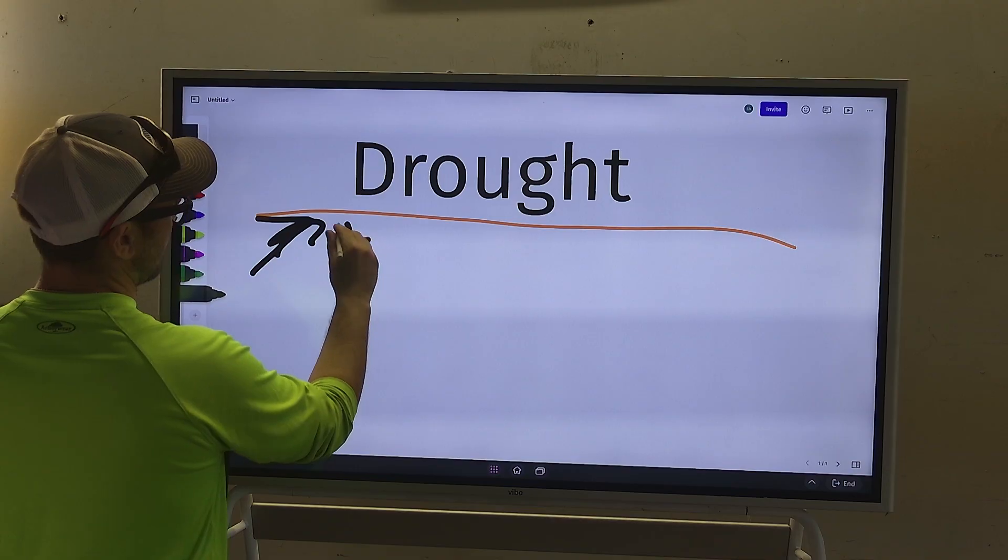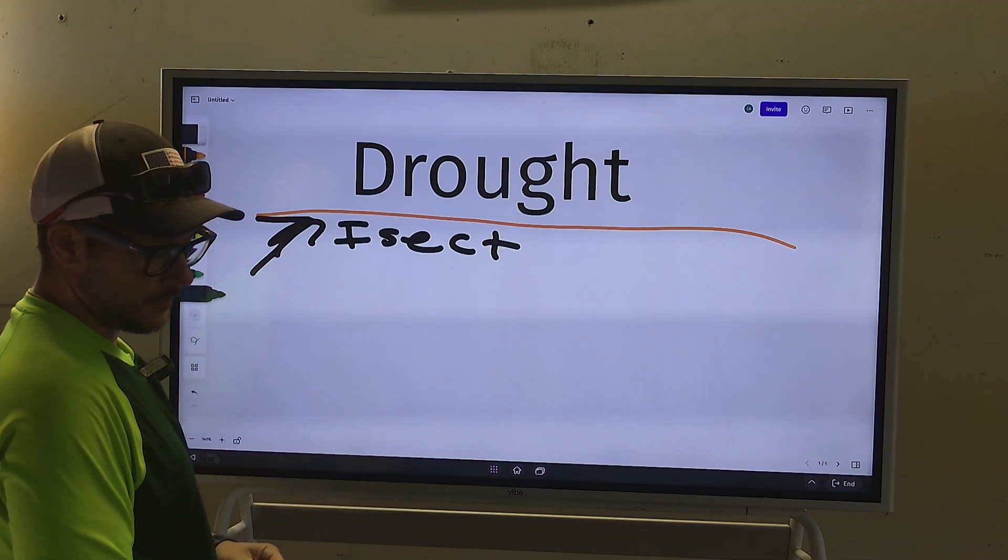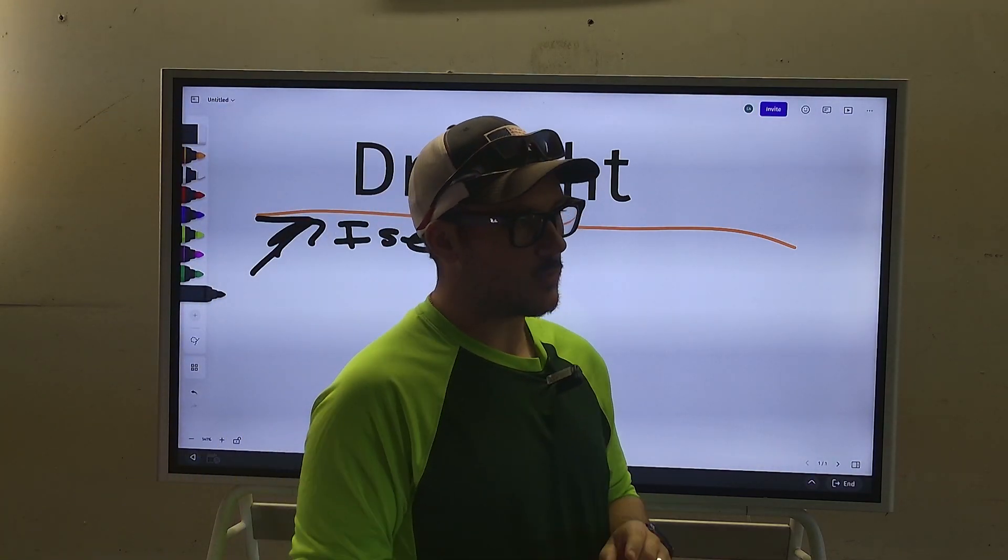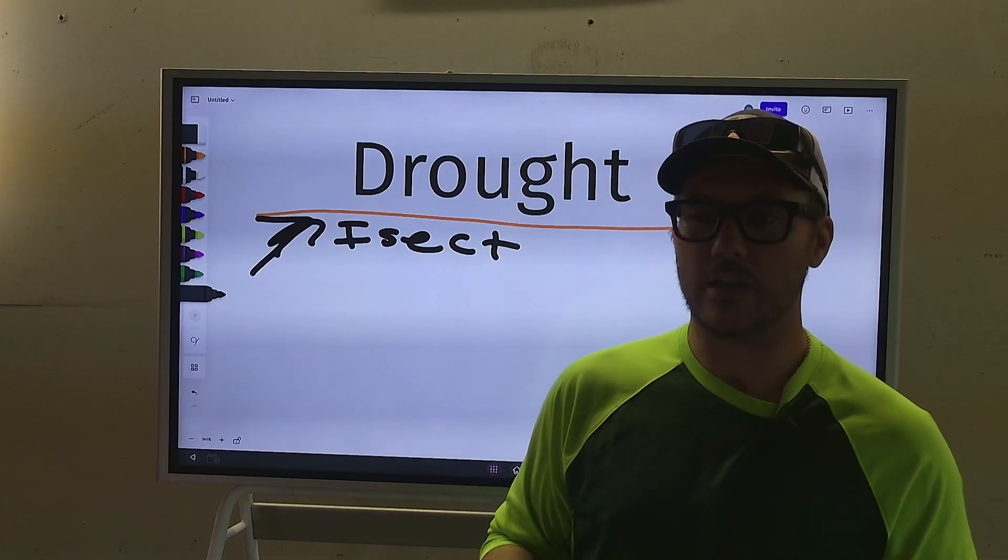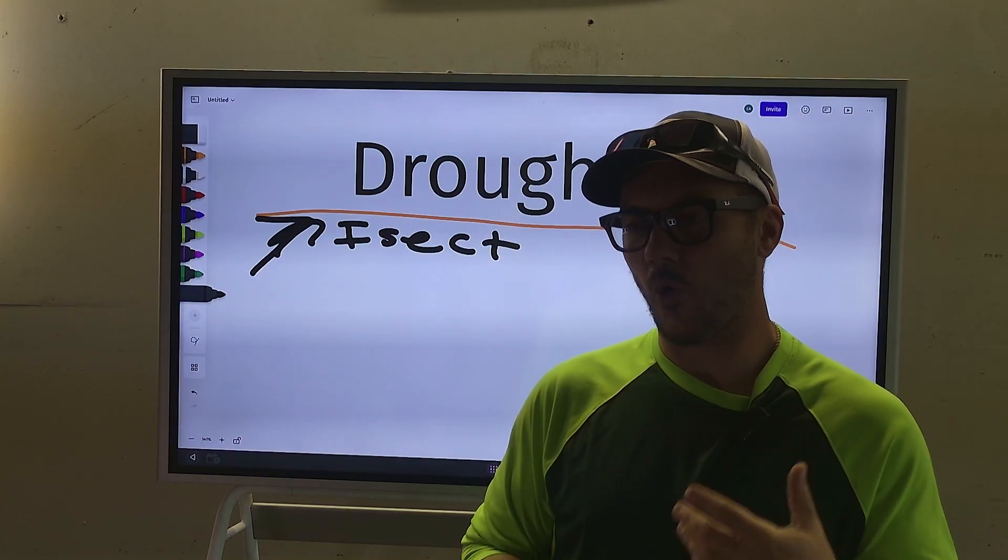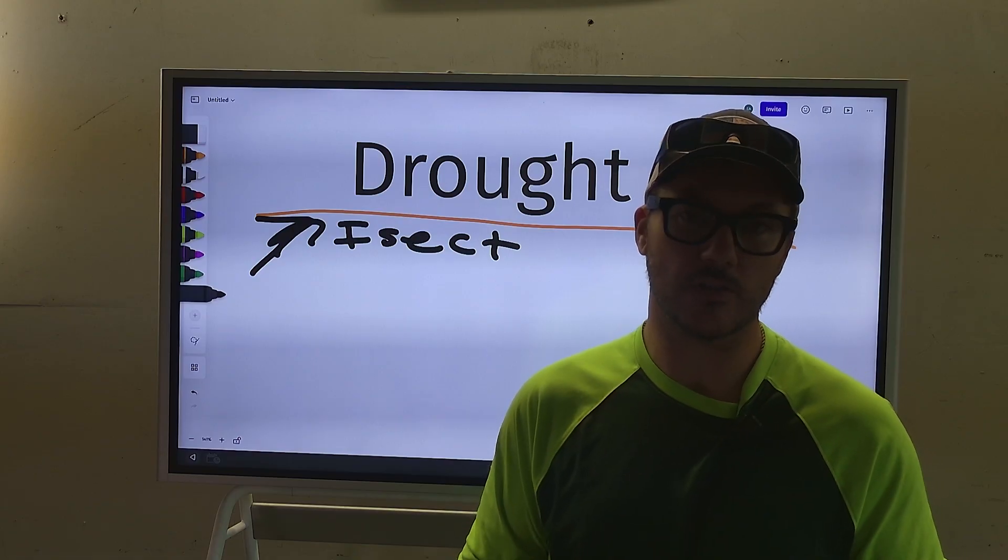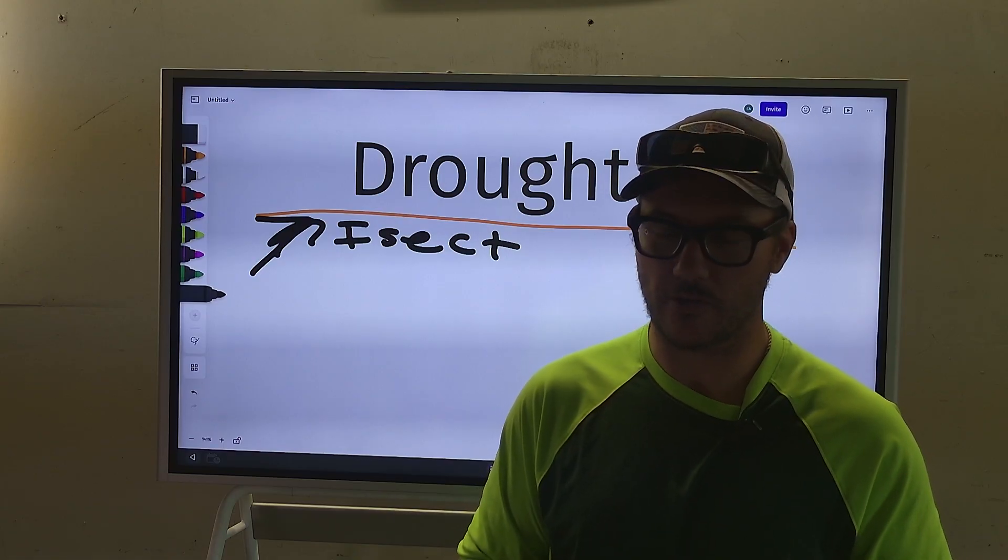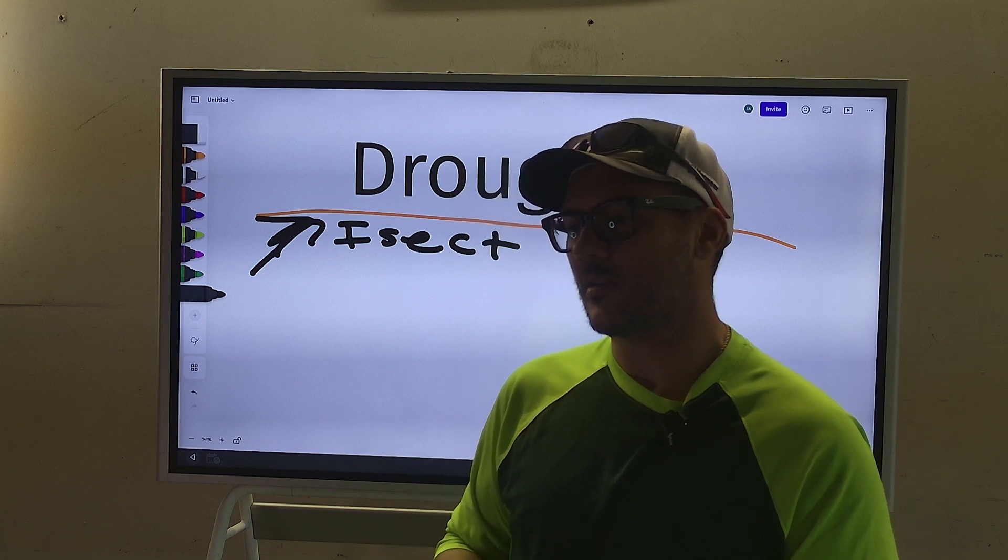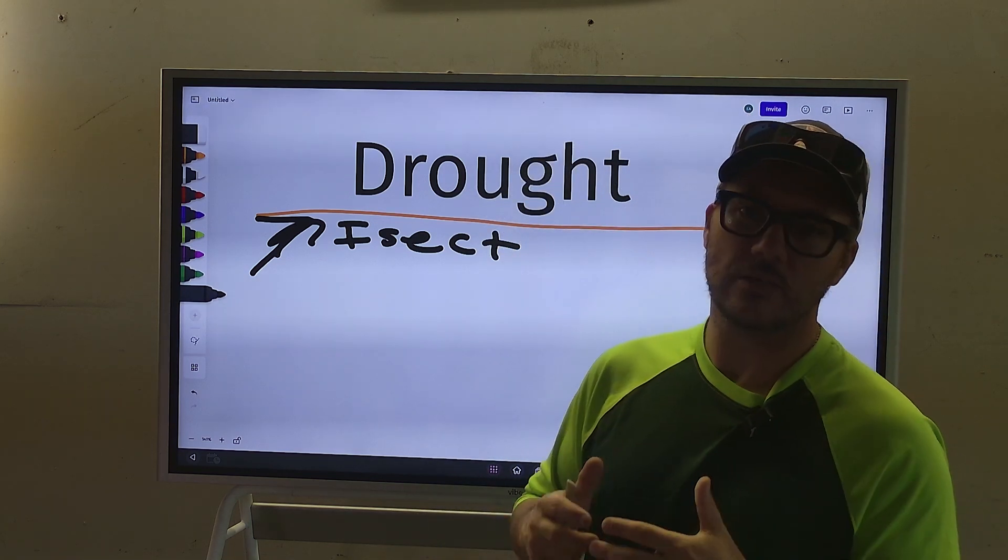And the reason for that, generally speaking, is because once we have a drought it's usually dry, it's usually warm, and warmth creates the breeding grounds for insects to breed multiple generations if they are an insect that has multiple generations.